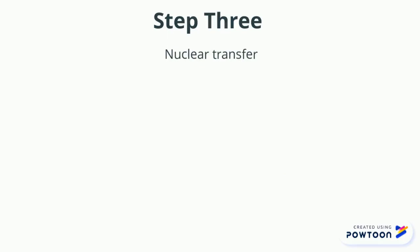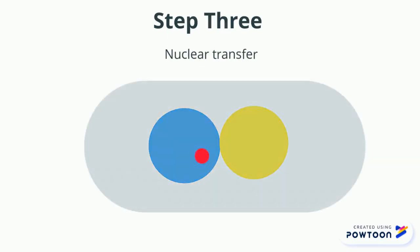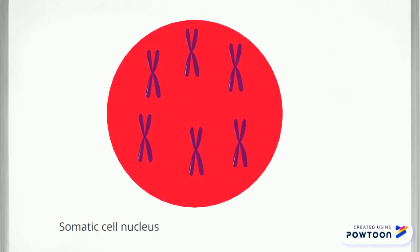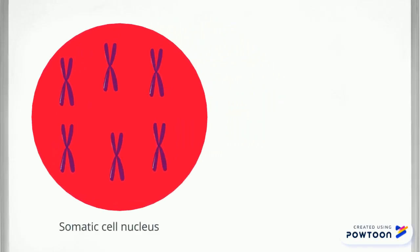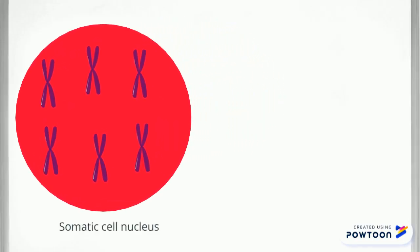The third step is nuclear transfer. The fibroblasts and egg are placed in a serum solution. The somatic cell's nucleus is removed using a pipette and then injected into the egg cell. A few electric pulses are given to the egg cell to fuse the somatic cell's nucleus and the enucleated egg cell together. The nucleus of a somatic cell is used because it contains all of the DNA and the correct amount of chromosomes to sustain life.